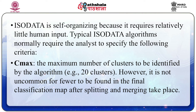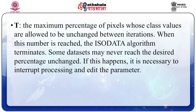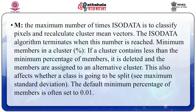Typical ISODATA algorithms require the analyst to specify the following criteria. Cmax: the maximum number of clusters to be identified by the algorithm — however, fewer may be found in the final classification map after splitting and merging. T: the maximum percentage of pixels whose class values are allowed to be unchanged between iterations; when this number is reached, the ISODATA algorithm terminates — some datasets may never reach the desired percentage, requiring the user to interrupt processing and edit parameters. M: the maximum number of times ISODATA is to classify pixels and recalculate cluster mean vectors; the algorithm terminates when this number is reached. Minimum number in a cluster: if a cluster contains less than the minimum percentage of members, it is deleted and members are reassigned to alternative clusters — the default minimum percentage is often set to 0.01.